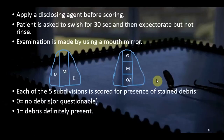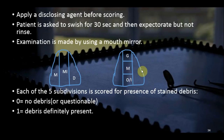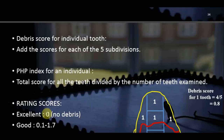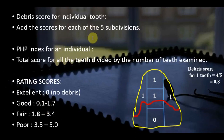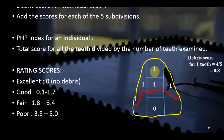In PHP, each tooth surface is divided into five subdivisions: mesial one-third, distal one-third, and the middle one-third is further divided into gingival, middle, and occlusal/incisal portions. Each subdivision is scored 0 (no debris) or 1 (debris present). The debris score for an individual tooth is the sum of all five subdivision scores divided by 5. For example, if four of five subdivisions score 1, the tooth score is 4/5 = 0.8.